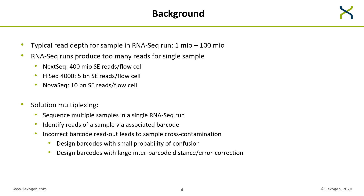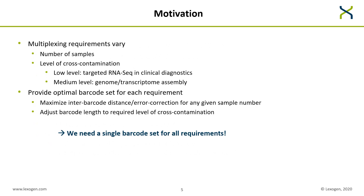This approach raises the problem that incorrect barcode readouts can lead to sample cross-contamination. We therefore want to design barcodes with a small probability of confusion, meaning we want barcodes with a large inter-barcode distance or a large number of correctable errors. Multiplexing requirements can vary — we can have different sample numbers and may require different levels of cross-contamination. For instance, a low level is necessary for targeted RNA-seq in clinical diagnostics where it's critical not to mix up reads from different patients, while a medium level may be acceptable in genome or transcriptome assembly.